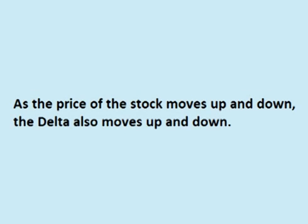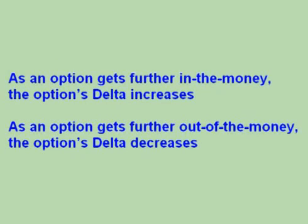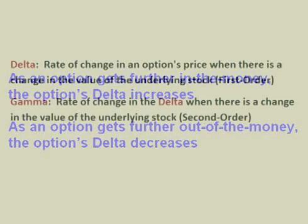The delta tells us how much the option will change in value when the price of the underlying stock changes. However, once the price of the underlying stock does change, the delta changes as well. As the price of the stock moves up and down, the delta also moves up and down. As an option gets further in the money, the option's delta increases. As an option gets further out of the money, the option's delta decreases. The rate of change in the delta when the price of the stock changes is known as gamma. The delta shows how much the option will change in value when the stock changes in value, and the gamma shows how much the delta will change when the stock changes value.